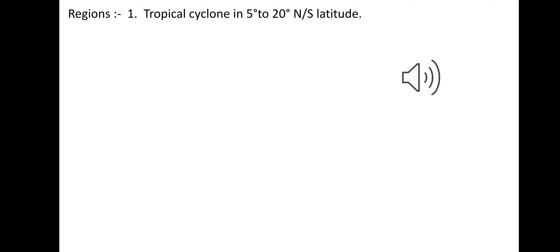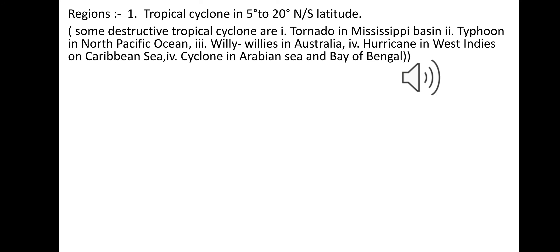Cyclones mostly happen in tropical regions between 5 to 20 degrees north and south latitude. Some destructive tropical cyclones are: tornado in the Mississippi Basin, typhoon in the South Pacific Ocean, cyclone in the Arabian Sea and Bay of Bengal, hurricane in West Indies and the Caribbean Sea, and willy-willy in Australia.